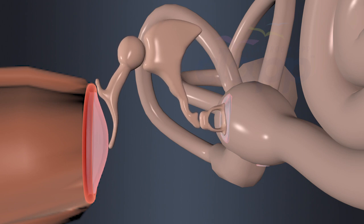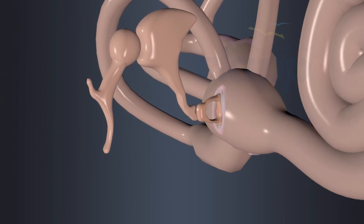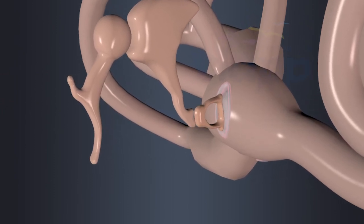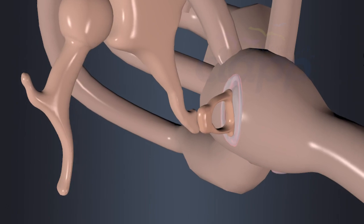The vibrations from tympanum are transmitted through the bones in the middle ear to the oval window that connects the stapes from middle ear with inner ear.